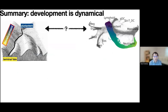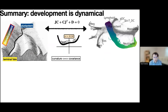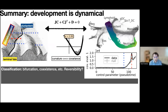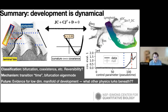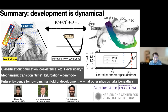In summary, a big surprise was that we could find any dynamics at all in this big-data approach to developmental systems. We used the continuous-time Lyapunov equation connecting curvature and covariance to get there. It would be interesting to follow up on reversibility — whether these bifurcations indicate less reversible developmental states — and this gives us evidence for a low-dimensional manifold of development, making it interesting to figure out what other physics lurks in these large datasets. Thank you.